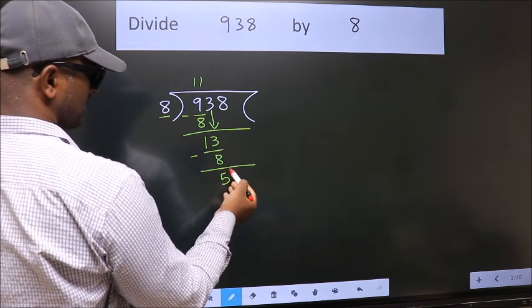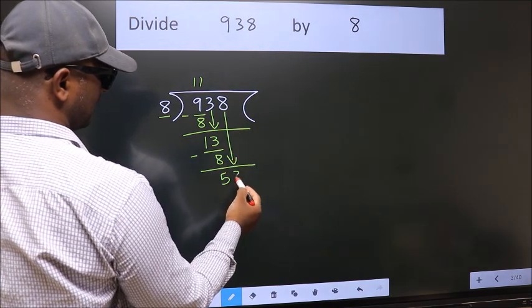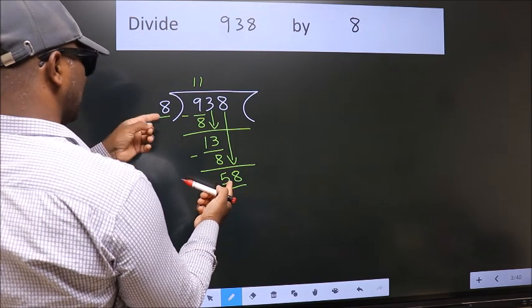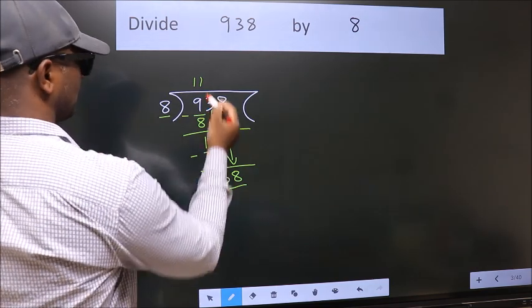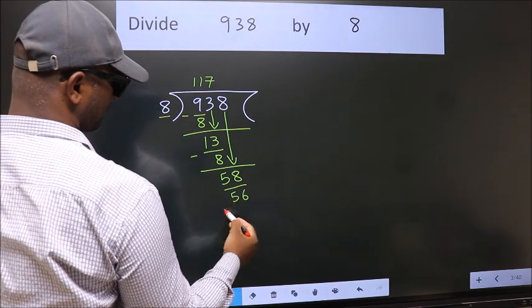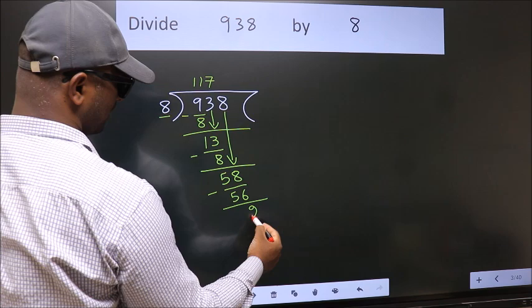After this, bring down the beside number. So 8 down. So 58. A number close to 58 in the 8 table is 8 sevens 56. Now we subtract. We get 2.